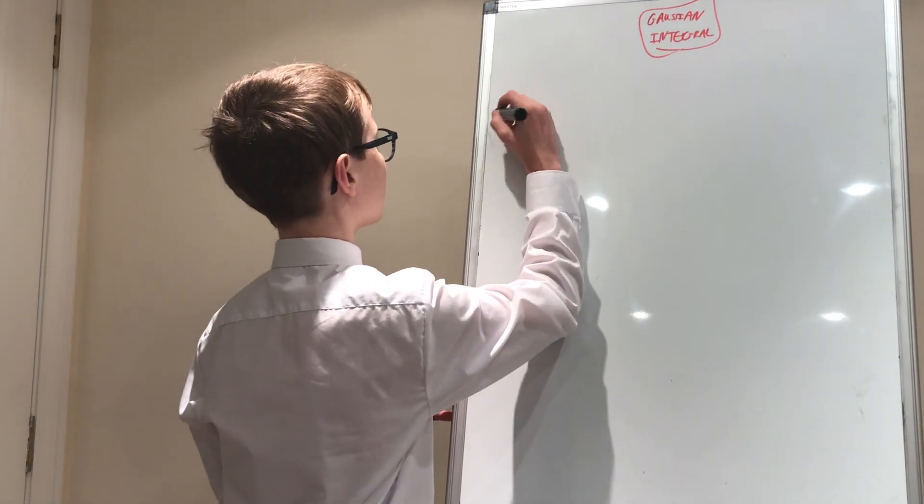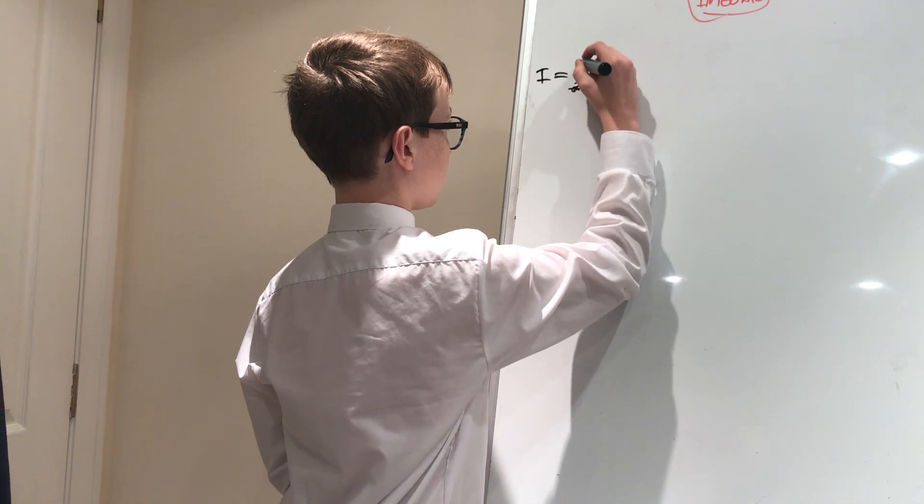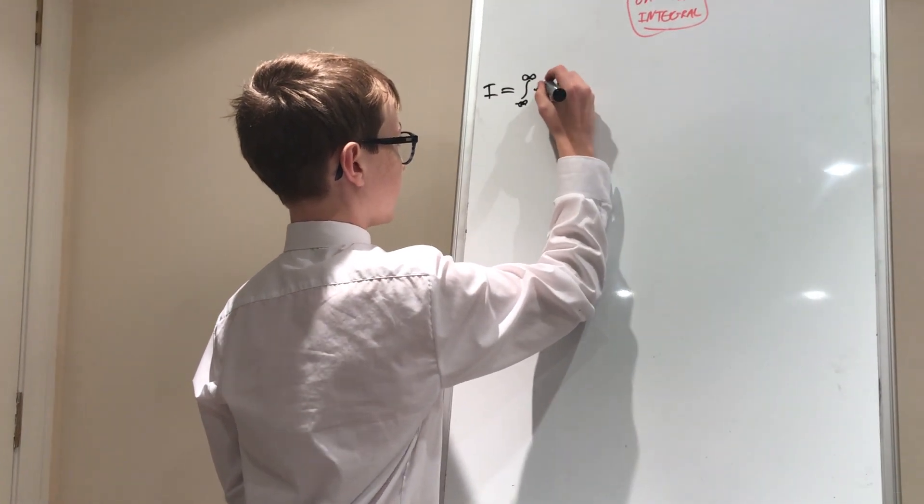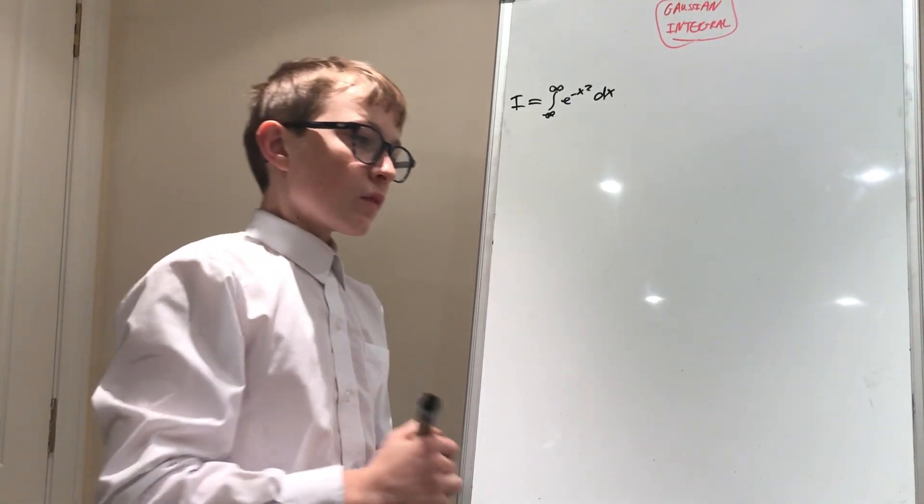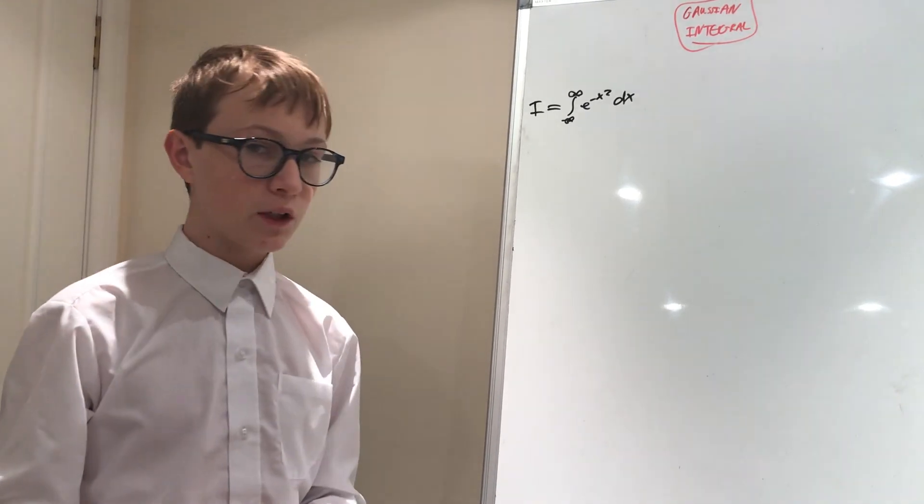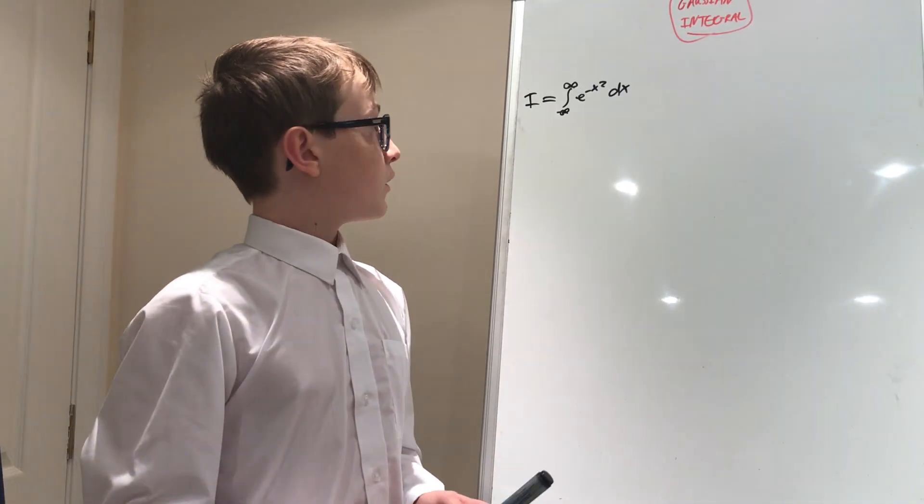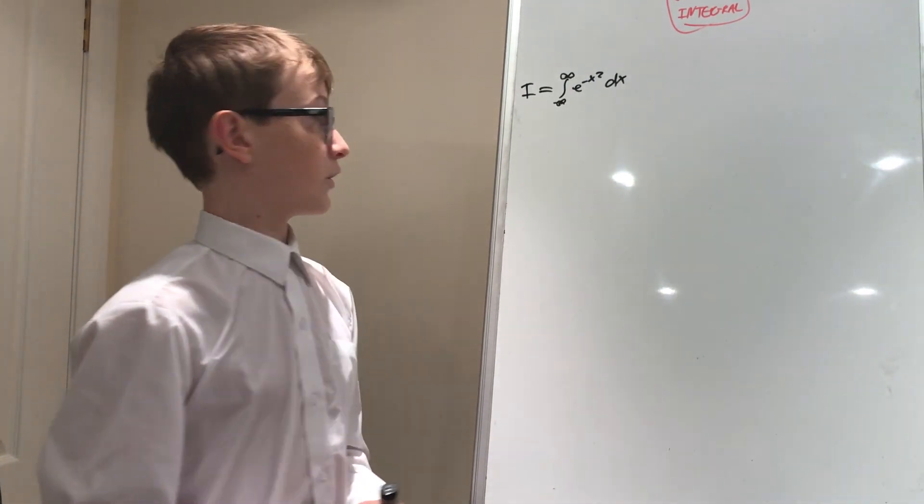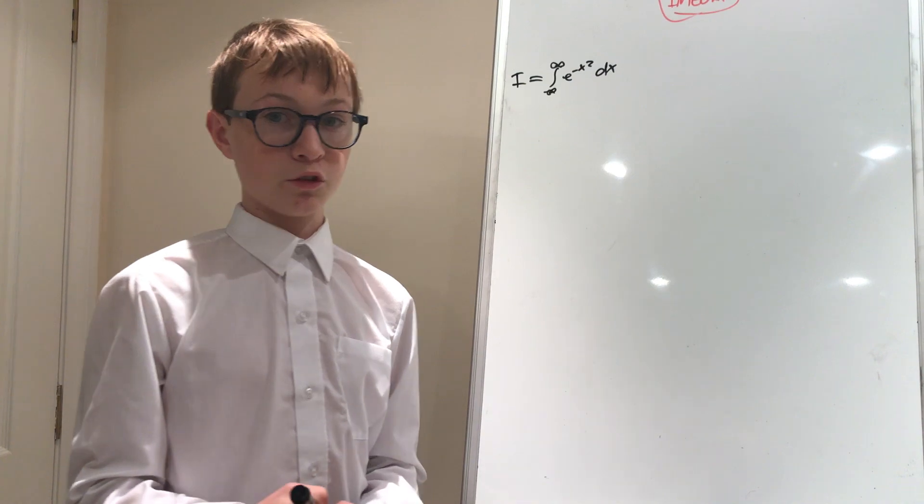Let's write out what the question is. I equals the integral between negative infinity and infinity of e to the negative x squared, dx. And today we'll be going over a method used by Laplace according to Wikipedia. This is the method he first came up with, which involves change of variables and polar coordinates.